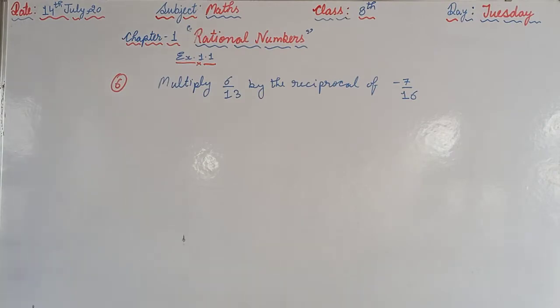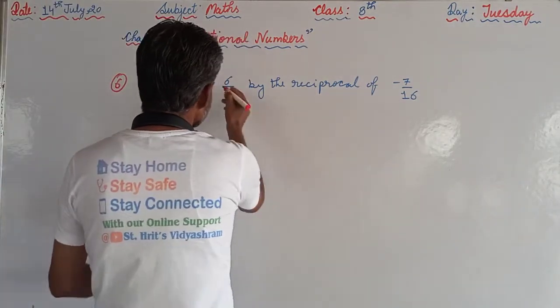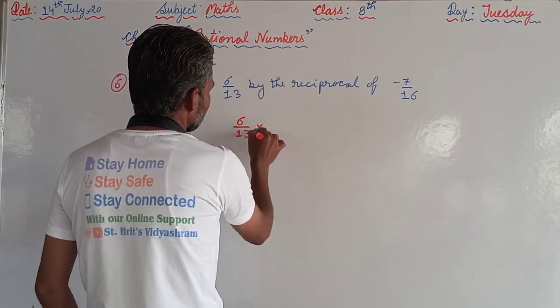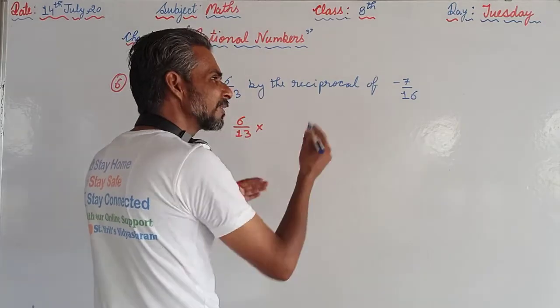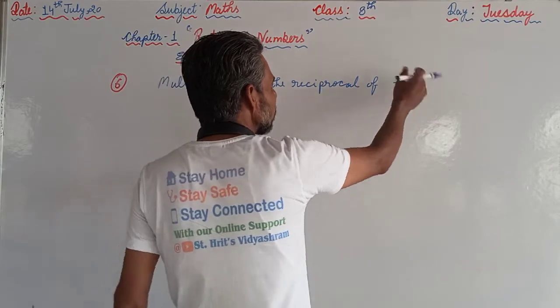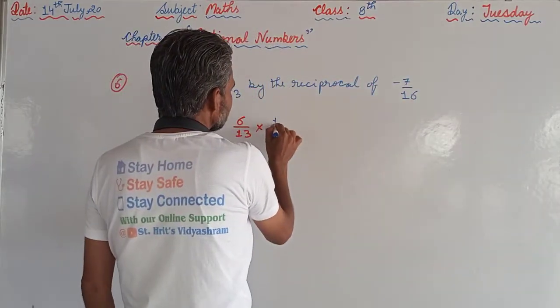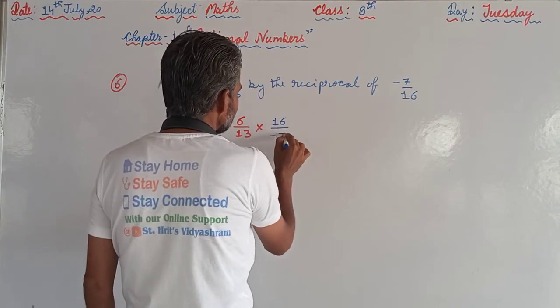So the question is that we are going to multiply 6 upon 13 by the reciprocal of this. The reciprocal means we are going to interchange the place of the numerator and denominator, which gives us 16 upon minus 7.